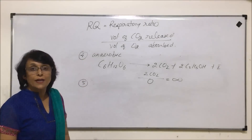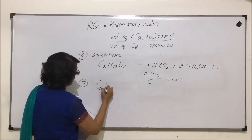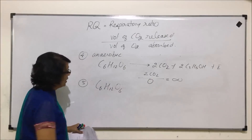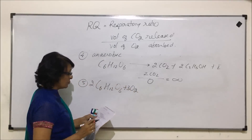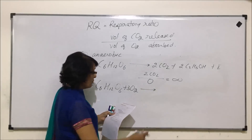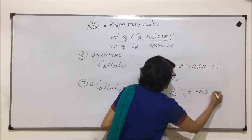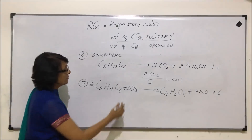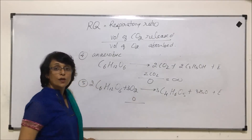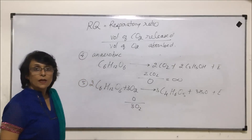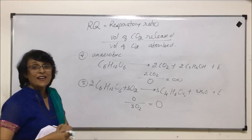In some special types of plants — succulent plants — the reaction that takes place involves glucose (C6H12O6) broken down in the presence of oxygen. Here 3 oxygen molecules are required for 2 glucose molecules, giving 3 molecules of malic acid, 3 water molecules and energy. How many CO2 molecules are given up? Zero. So 0 divided by anything gives 0. RQ in case of succulent plants is 0.